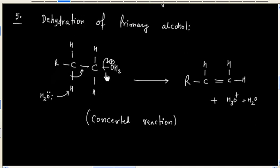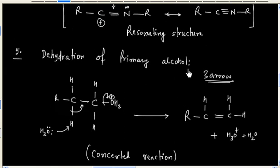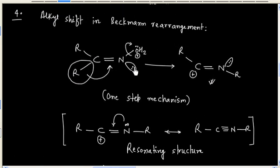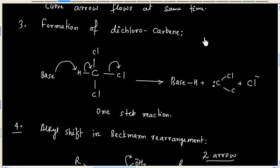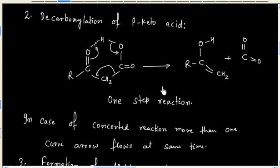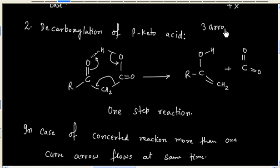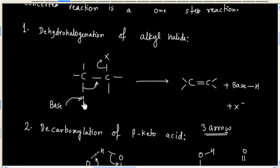In this reaction we have three arrows that flow in one step. In this reaction we have two arrows. In this reaction we have three arrows. If you see this reaction, we have three arrows. Finally, this reaction also has three curved arrows that flow in one step. So whenever you have a concerted reaction, more than one arrow flows at the same time — that is, bond breaking and bond forming occurs simultaneously.